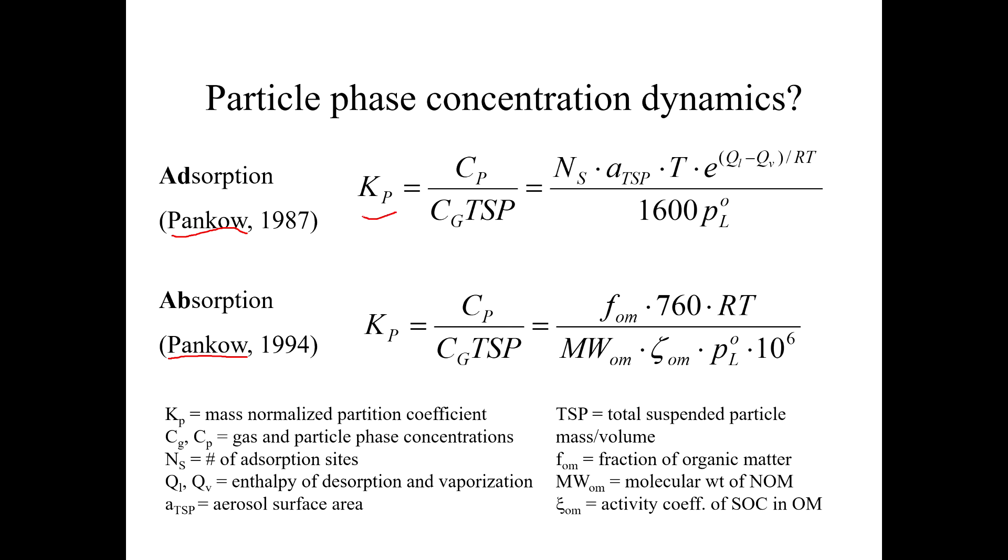He said we can describe our partitioning by defining this thing we'll call Kp, which is our gas particle partitioning coefficient, and it's the concentration of the chemical in the particle phase divided by the concentration of the chemical in the gas phase. Concentration of the particle phase would be like nanograms of chemical per gram of particle, and concentration of the gas phase would be nanograms of chemical per cubic meter of air. You need to have the total suspended particulate, the grams of particles per cubic meter of air to make all the units cancel out so that Kp will be dimensionless.